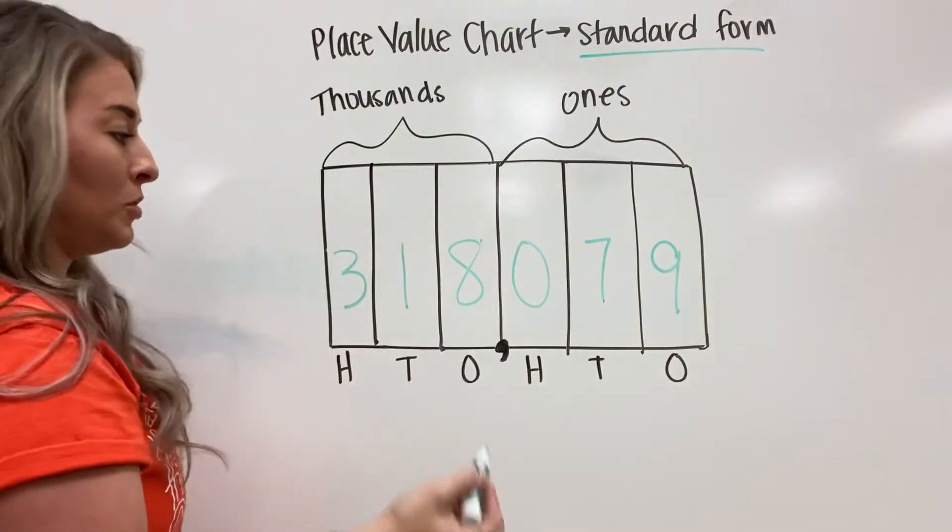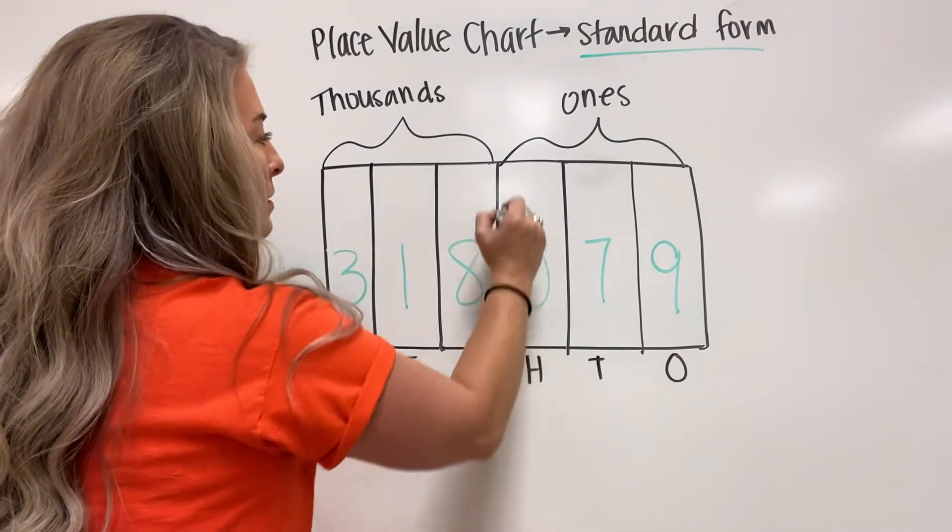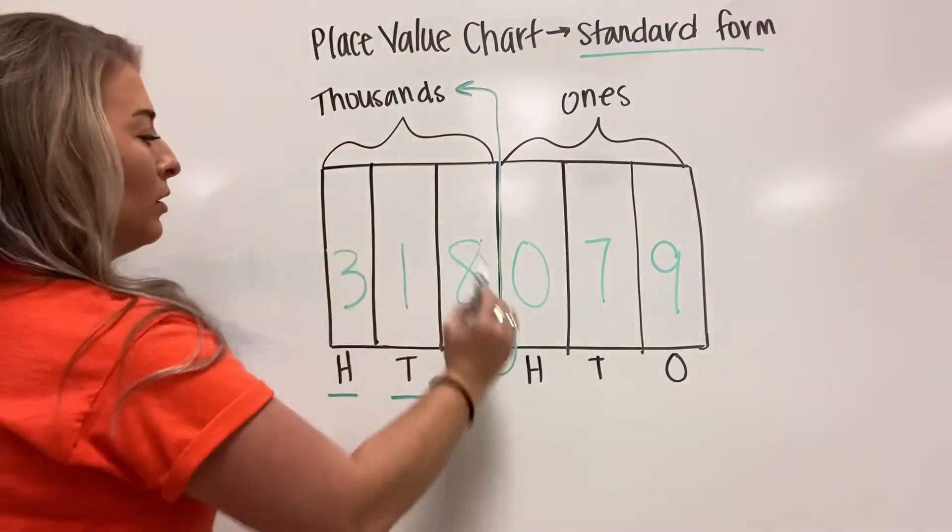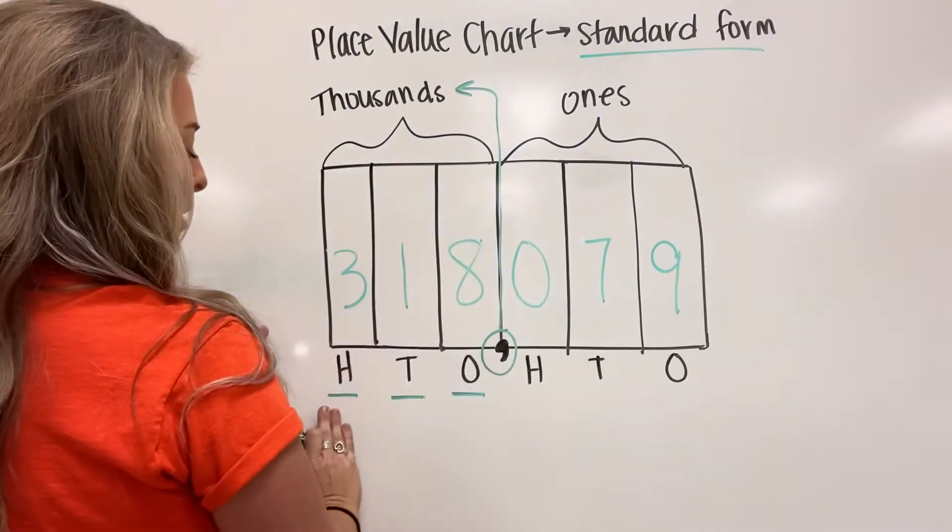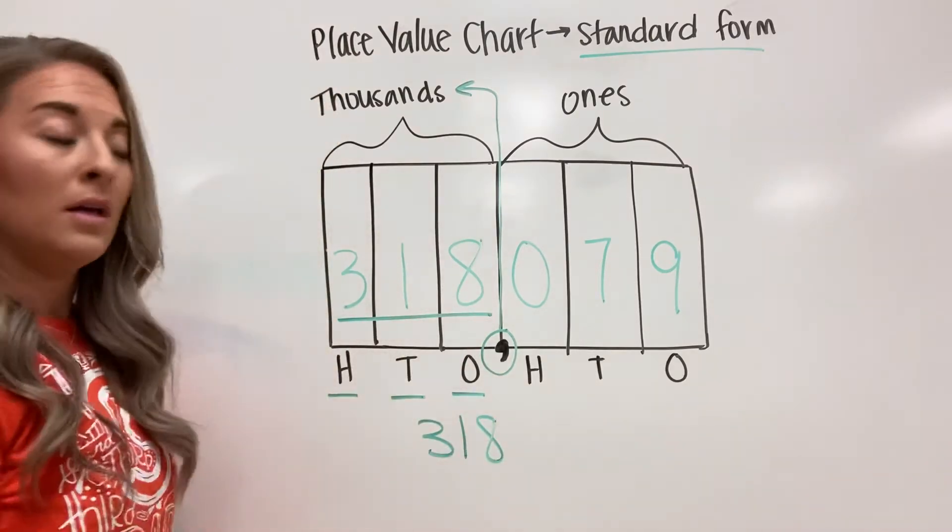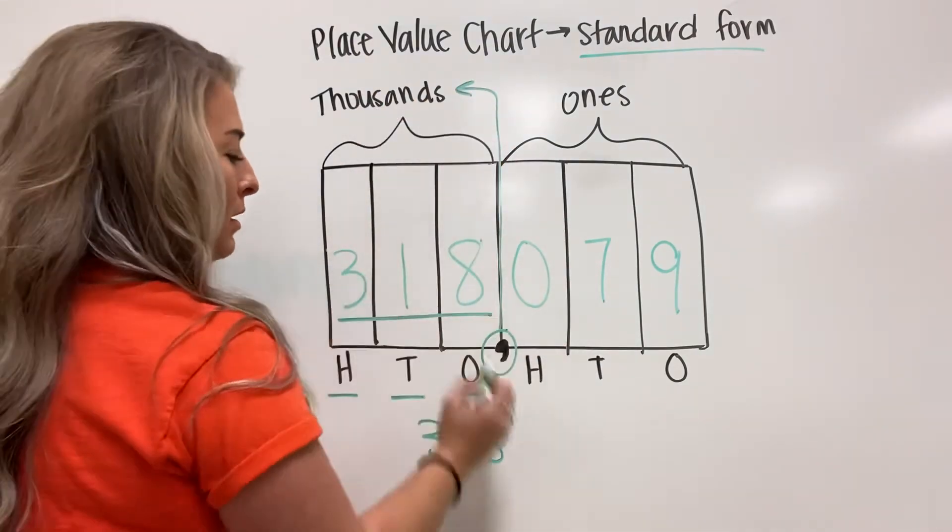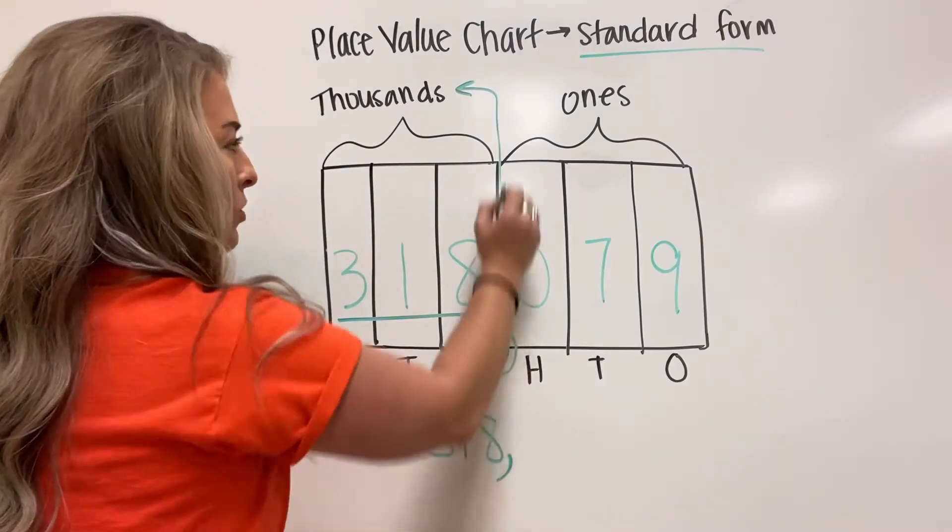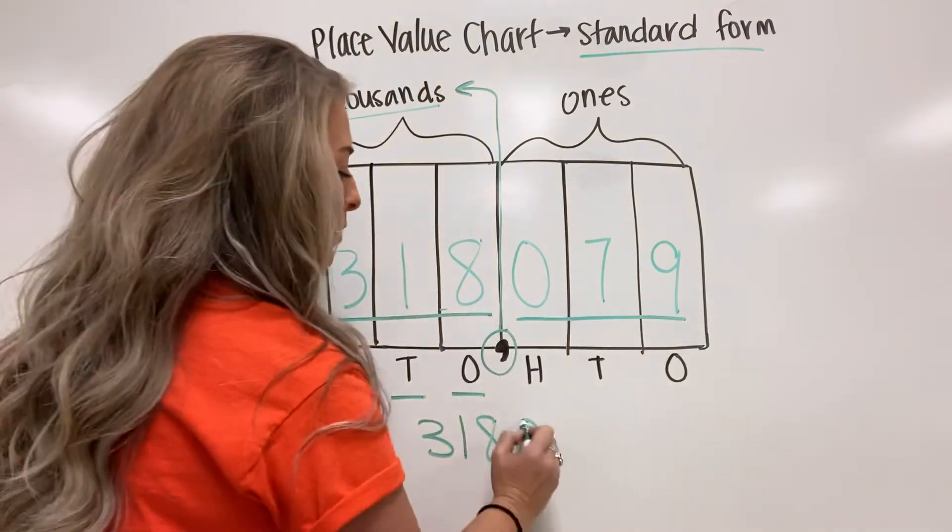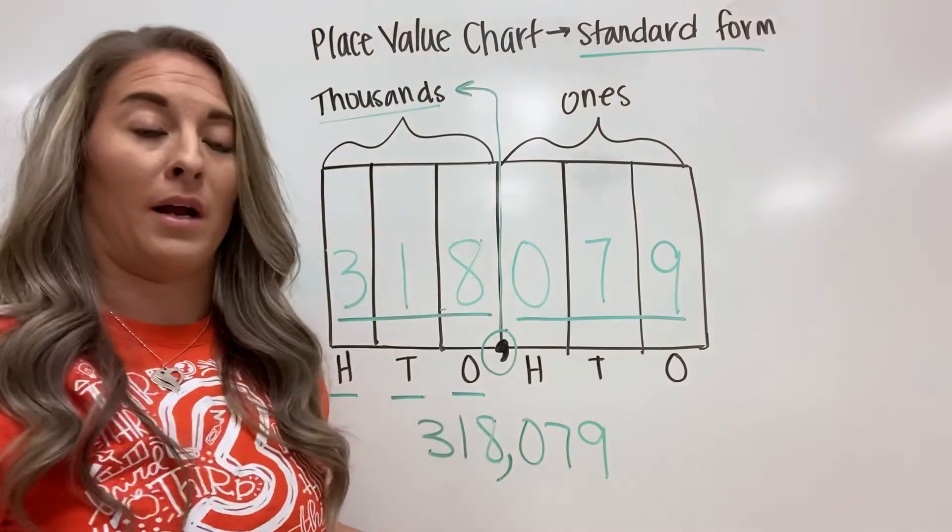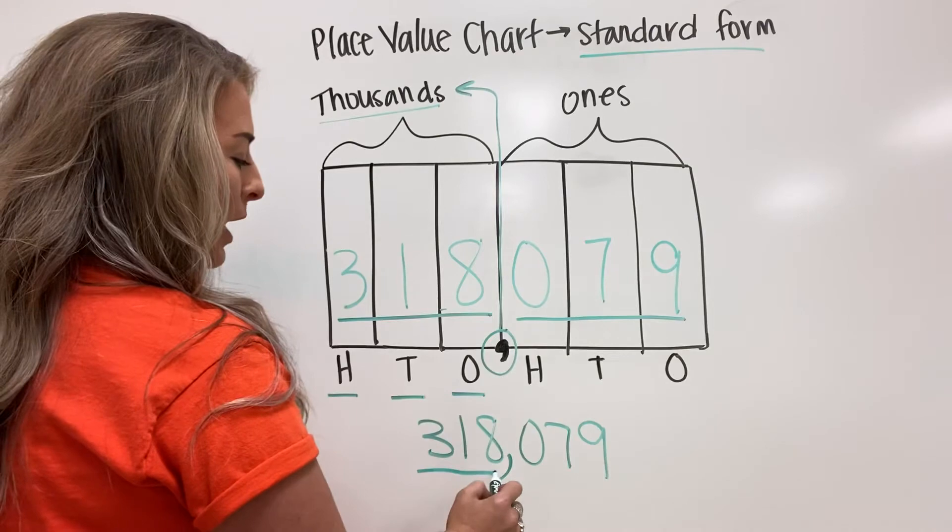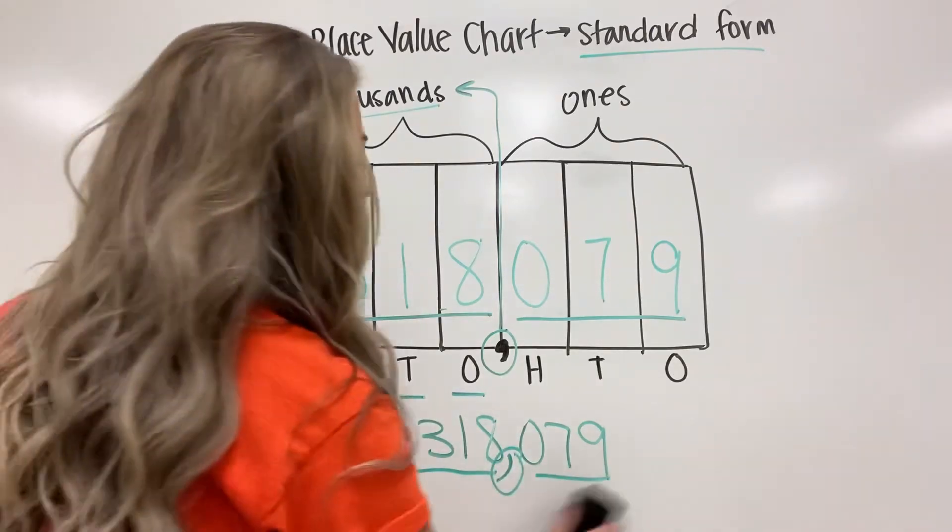So if I want to read this number to you, what I do is this comma will say the period that this is in, and I will read this completely normal using hundreds, tens, and ones. So when I look at my first period, the thousands period, if I read this like hundreds, tens, and ones, this right here just says three hundred eighteen. Then when I get to my comma I say the period that this is in. So three hundred eighteen thousand. And then I read this completely normal - seventy nine. I don't have to say zero seventy nine because it's implied that I don't have any hundreds when I just don't say the hundreds place. So this number reads three hundred eighteen thousand seventy nine.